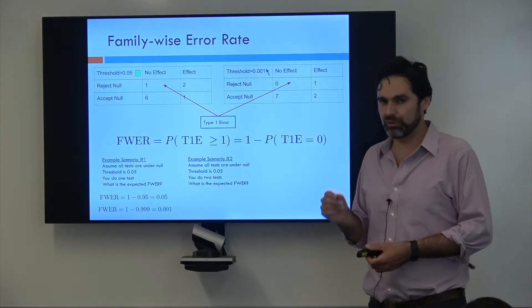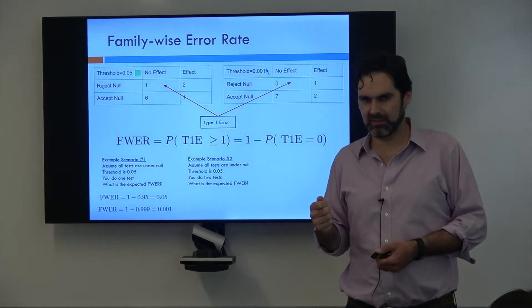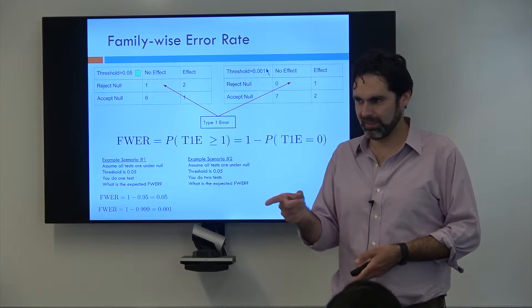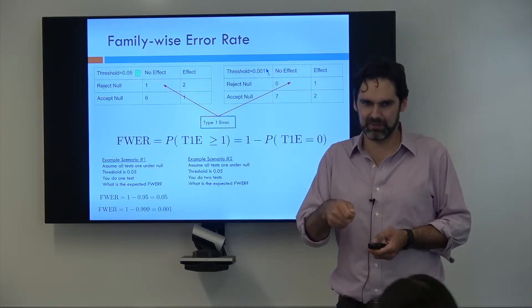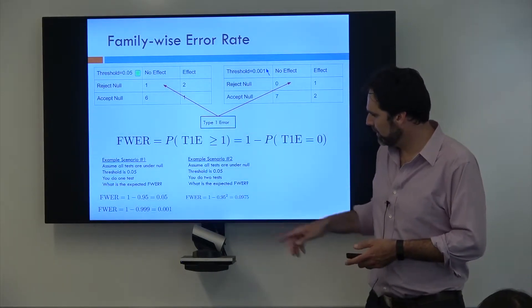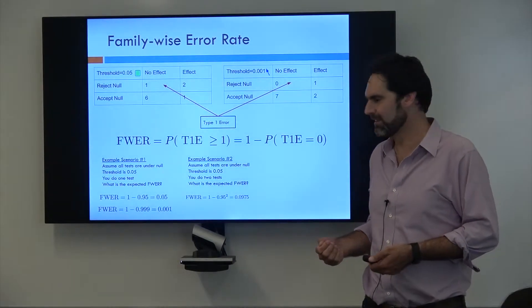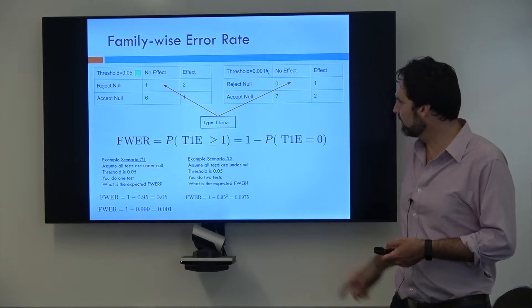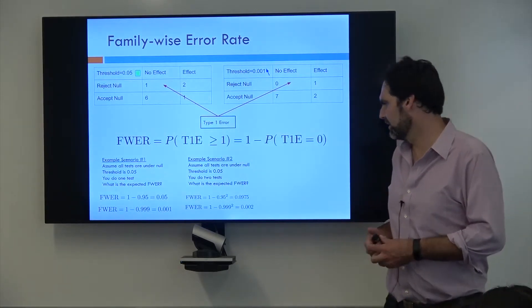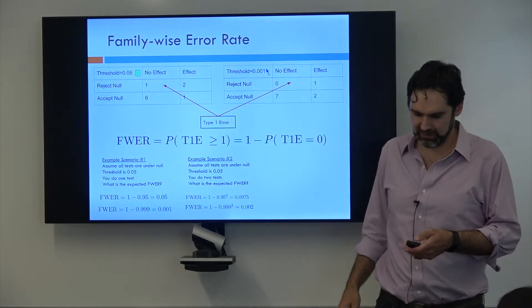Scenario two. Exact same thing, but now we do two tests. What's the probability of having no type 1 errors if we do two tests? 0.95 squared, right? Because they're independent tests, so it's the probability of the first one not being a false positive times the probability of the second one not being a false positive. And so we get this equation. But you can see up here that when we controlled a threshold of 0.05, all of a sudden our family-wise error rate is approaching 0.1. So we have almost a 10% chance now of having a type 1 error in our data. Whereas if we have this higher threshold, what do we think is going to happen? It's going to be lower, right? Because if you square a number really close to 1, it stays pretty close to 1. And so as you can see down here with this higher threshold, the family-wise error rate still stays really low.